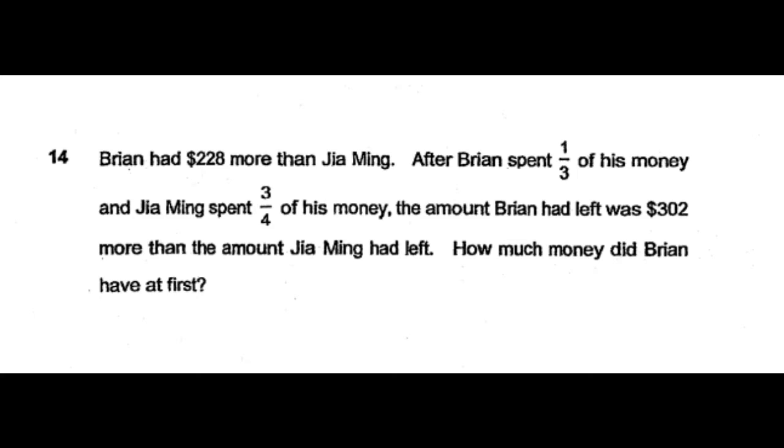This is a four-mark question, question number 14. Brian had $228 more than Jia Ming. After Brian spent 1/3 of his money and Jia Ming spent 3/4 of his money, the amount Brian had left was $302 more than the amount Jia Ming had left.